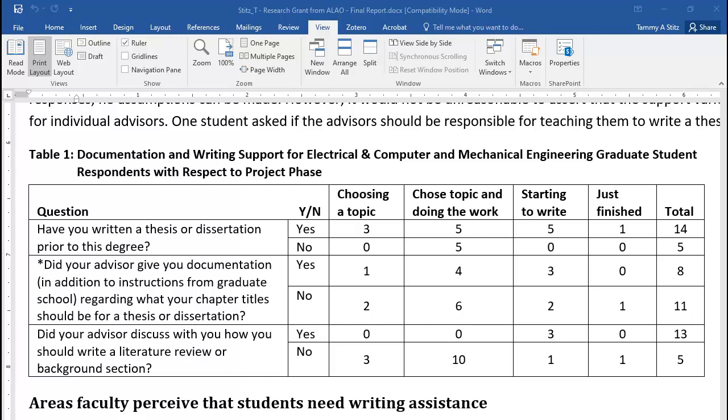The headings on each of the columns are choosing a topic, chose topic and doing the work, starting to write, and just finished. This asks the graduate students at what phase they were in their thesis and dissertation research. They have four distinct categories they can pick. So they're being categorized again. This is qualitative information.